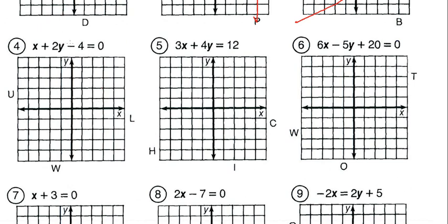Question 4: we add 4 to one side and subtract x, giving us 2y equals positive 4 minus x. Dividing both sides by 2 gives y equals 2 minus 1/2 x. So y-intercept is 2, slope is negative 1/2, going down. That line goes right through letter L, so let's cross out L.